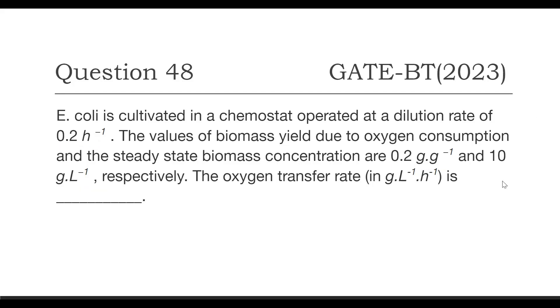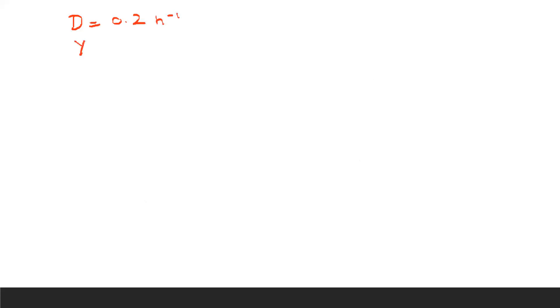Let's see what data is given. The dilution rate is 0.2 per hour, the biomass yield due to oxygen uptake is 0.2 gram per gram, and the biomass concentration is 10 gram per liter.